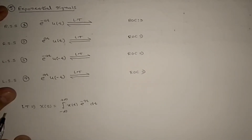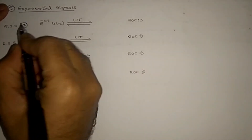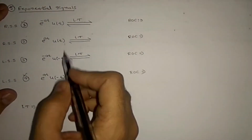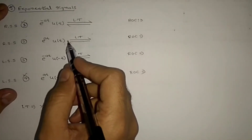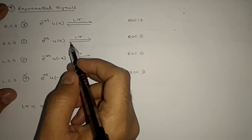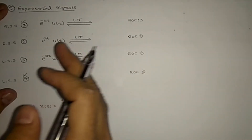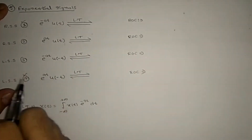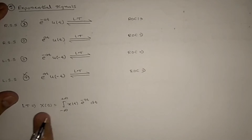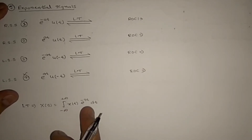We apply Fourier transform to these signals, but for some of them it fails because they are not absolutely integrable. Laplace transform will give a solution for all 4 types of signals. The standard formula is X(s) = integral from minus infinity to plus infinity of x(t) e^(-st) dt.